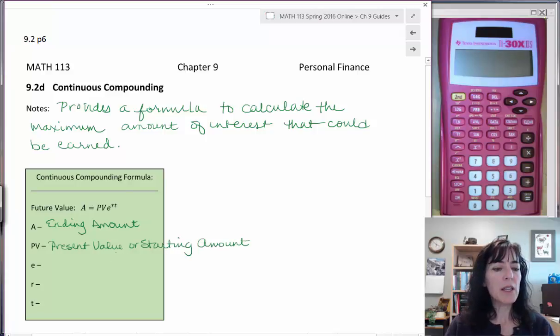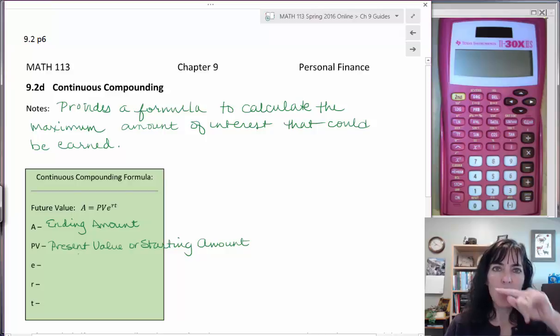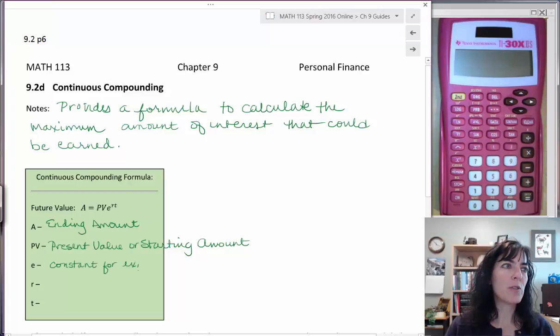The e is a constant of exponential growth. Remember that growth that we looked at with the compound interest in Excel, how we looked at that graph and it went up really sharply? That's exponential. And that's what this constant helps us achieve with our continuous compounding formula.